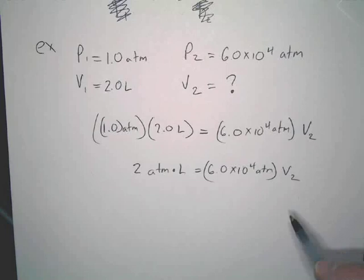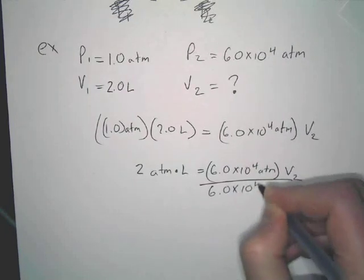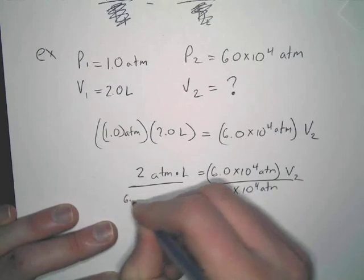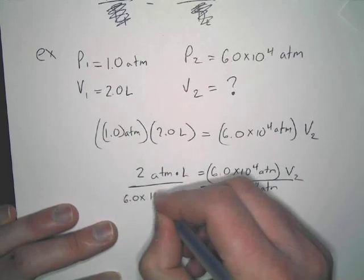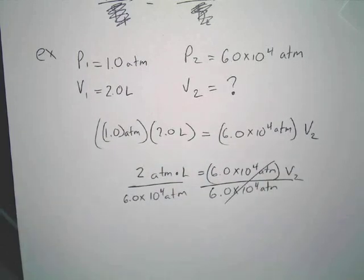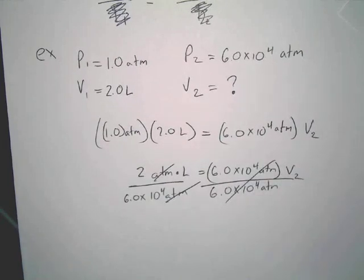Now, we're here. We just simply divide. I'm just doing it to prove my point. Now, notice, there's a reason I showed you this. I know you know how to do this, but look at your units. The ATMs cancel. You're left with liters alone, which is the whole point of this.